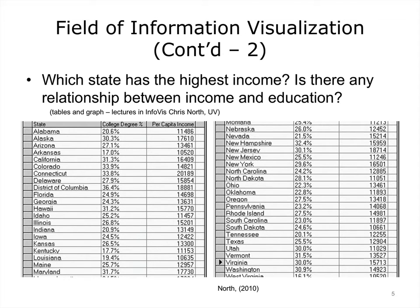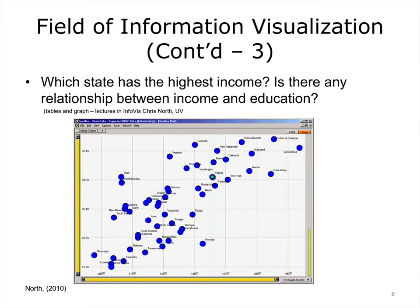All these properties make vision a great resource to use in the design of computing applications. Let's look at this example. This is a very common way of presenting data in a table. This table contains census data, specifically average education level and income in different states. Can you tell me which state has the highest income? Is there any relationship between income and education? Now looking at a relatively simple visualization of the same data, its salient properties become more apparent. We no longer need to rely on serial search, scanning the table one item after another. We can quickly grasp the relationship in the data just by looking at the graph.